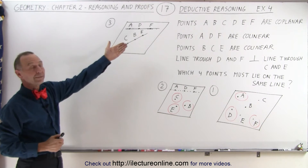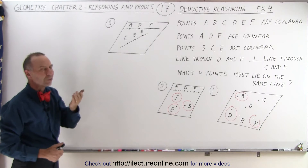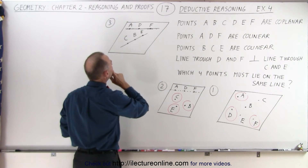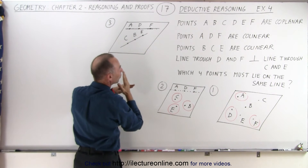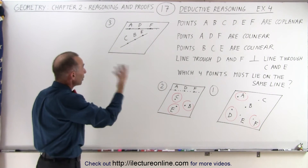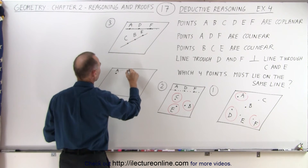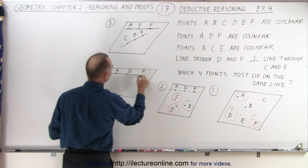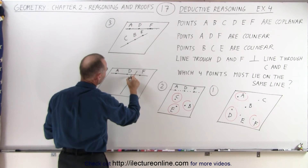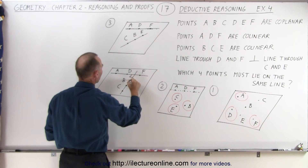So now we've met requirement one — they're all on the same plane. Requirement two — that A, D, and F are collinear. Requirement three — that B, C, and E are collinear. But now we have another requirement: the line through D and F must be perpendicular to the line through C and E. D and F are on this line, which must be perpendicular to the line through C and E. They don't appear to be perpendicular, so we're going to have to redraw it again. Here's my plane, with the line through A, D, and F. Now I draw another line at a right angle — those two lines are perpendicular. And you can see that this is C, this is B, and this is E.